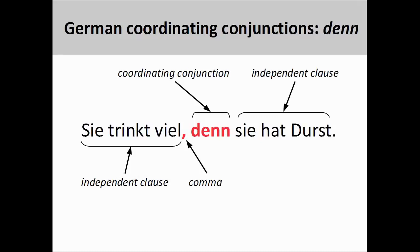The coordinating conjunction denn, meaning FOR, BECAUSE, and SINCE, is used to express a causality between two independent clauses. For example, the first clause, 'Sie trinkt viel' (she drinks a lot), is further modified by the second clause, which gives the reason why the subject is drinking so much: 'Sie hat Durst' (she is thirsty). Denn is used when the causality between the two clauses is less necessary and the function of the second clause is to introduce helpful but possibly more parenthetical information. The subordinating conjunction weil, although having the same meaning in English as denn, implies a more strictly necessary condition between the two clauses.